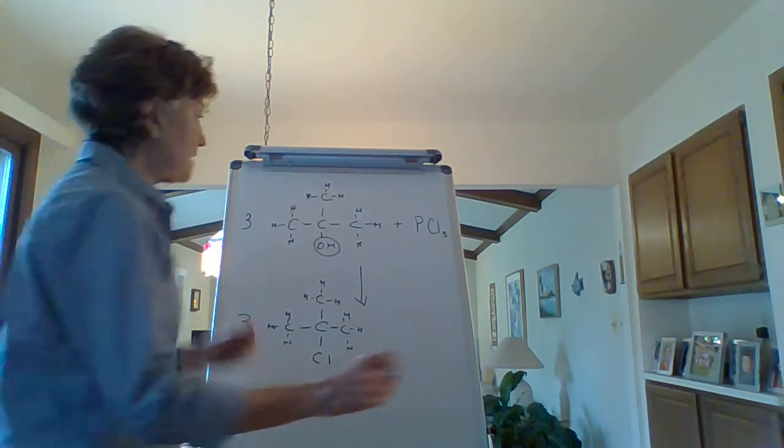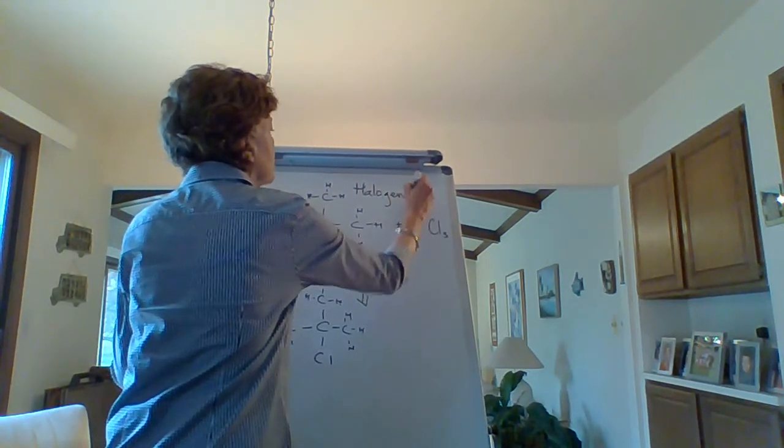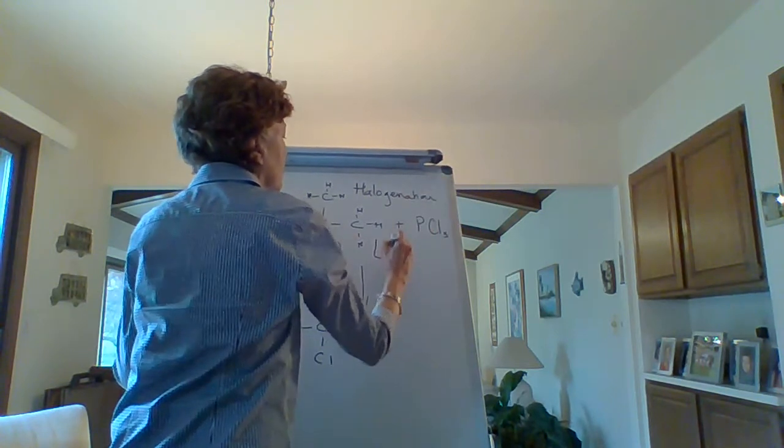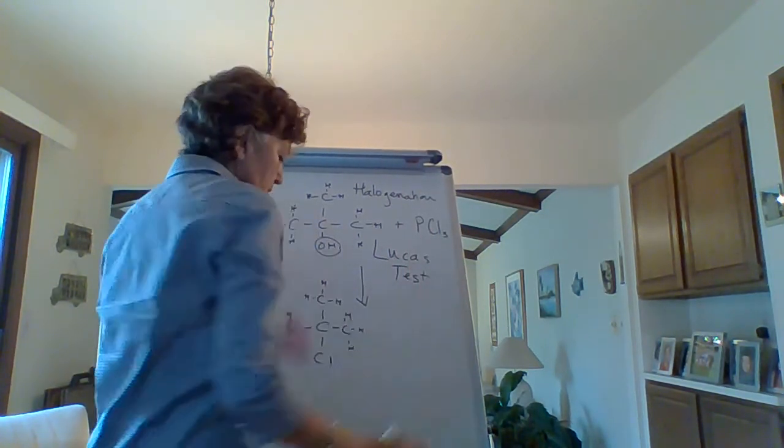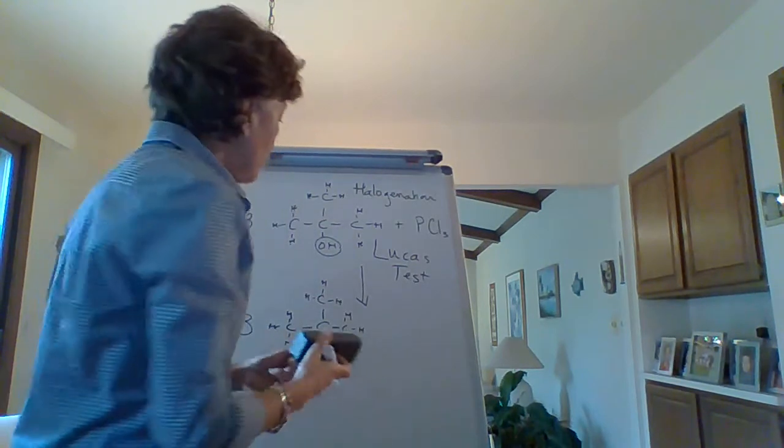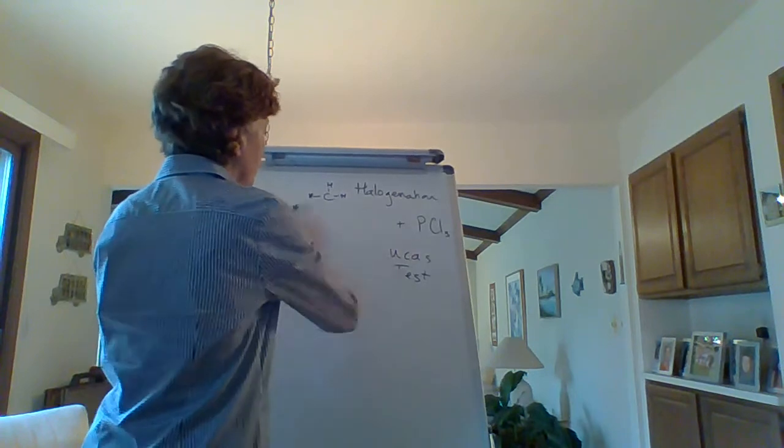That's the last one, halogenation. Like I told you, in lab we call this the Lucas test. So we're done with alcohols and ready to move on to phenols and then ethers.